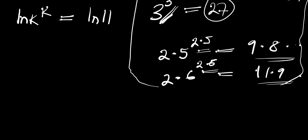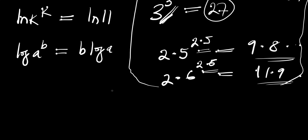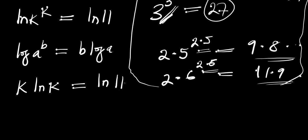According to the logarithm property, if you have log of a to the power b, this equals b times log of a. So applying that here: ln of k to the power k gives us k times ln of k equals ln of 11.